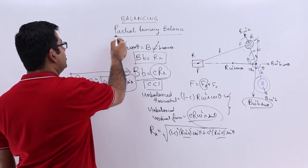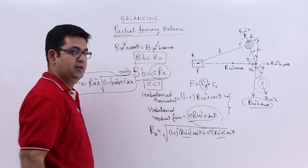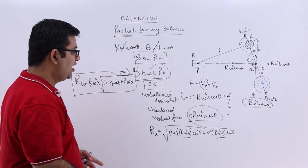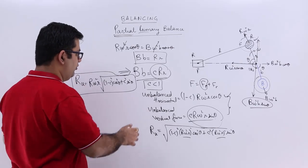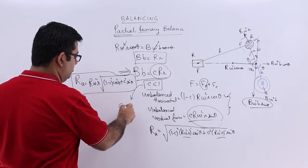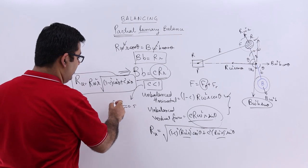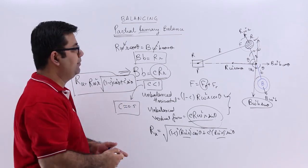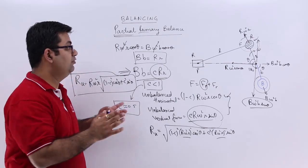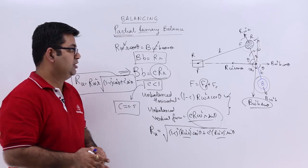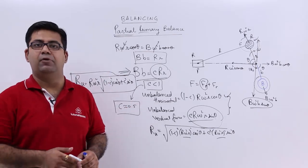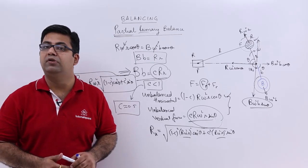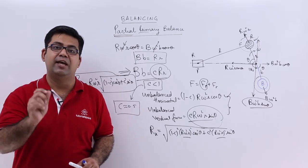So that is why it is called partial primary balance, because you cannot balance anything completely. So for practical purposes, we assume that c is 0.5. So we are only able to balance 50 percent of the unbalanced force. So this finishes the entire chapter on balancing. And after this we move on to the next chapter and talk about the gyroscopic motion.